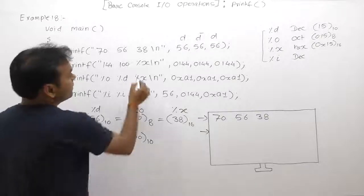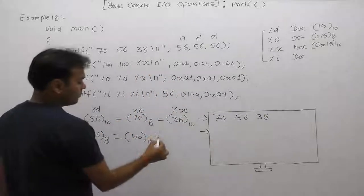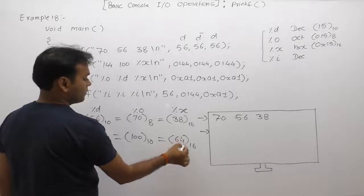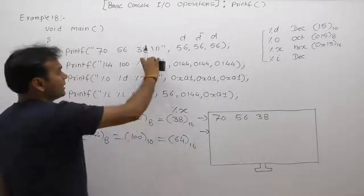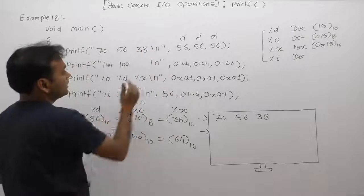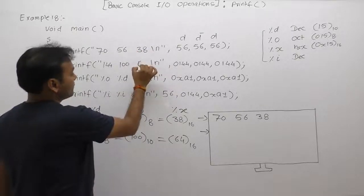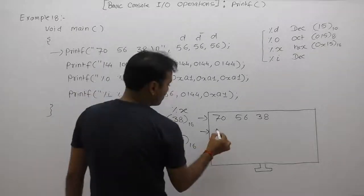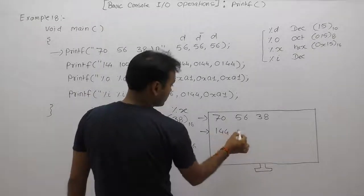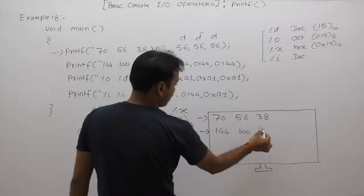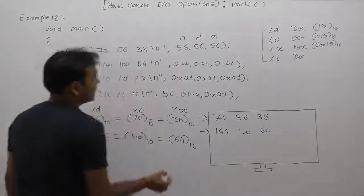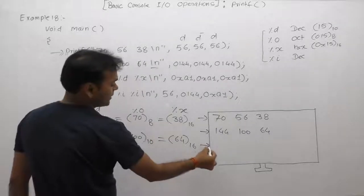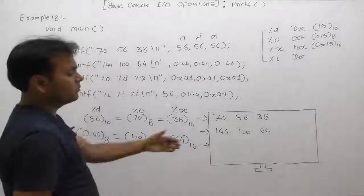For %x, we need the hexadecimal equivalent of 0144 (decimal 100), which is 64. So %x is replaced by 64. The final printed message is 144, 100, and 64.